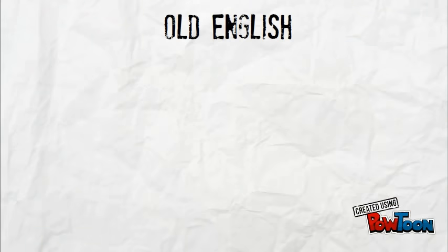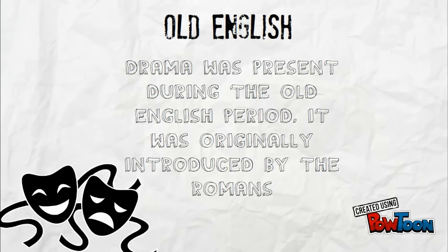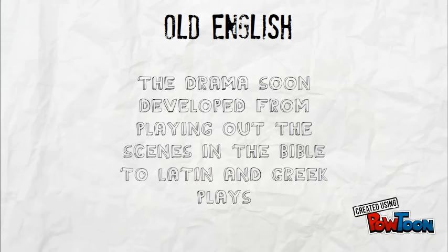There are a few more names, but the point is there were not only epics during the Old English period. Aside from poetry and prose, there was also drama. The theaters were introduced by the Romans after their invasion of the land, expanding the literary possibilities during this time. Old English drama started as brief scenes illustrating Bible stories before expanding into Greek and Latin drama.